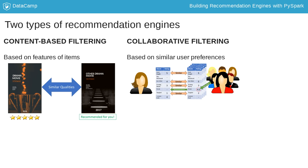The features and groupings are created mathematically from patterns in the ratings provided by users. When you provide ratings for a product or item, whether it be a thumbs up or thumbs down, or even if you just watch a video without giving it a rating,